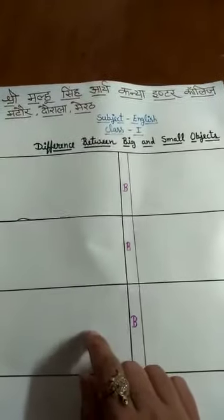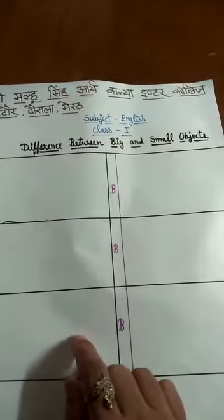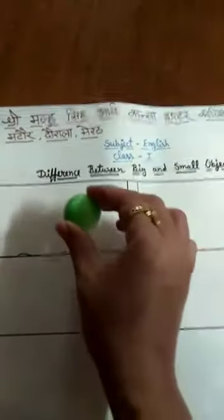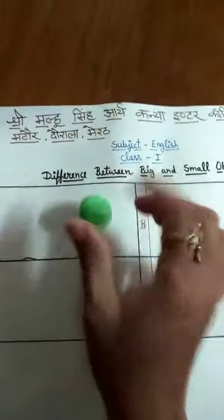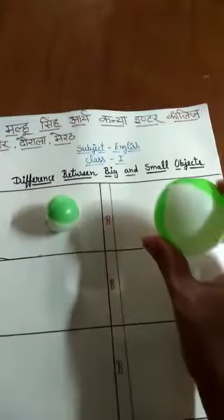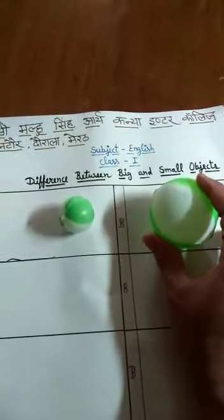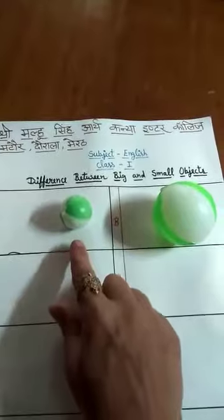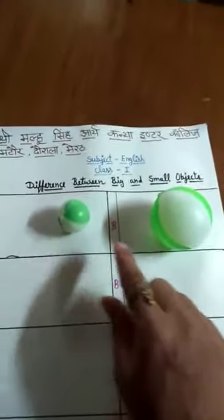Hello students, how are you? I hope you will be fine. So here we have learned the difference between big and small objects. I have some objects — this is a ball, and this is also a ball but it is big. We can say this is a small ball.